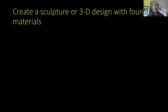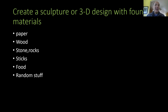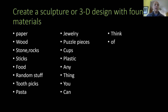You're going to create a sculpture or 3D design with found materials. What could those materials be? I have a list, but you can use anything not even on it. Some examples: paper, wood, stone or rocks, sticks, food, random stuff — toothpicks, pasta, jewelry, puzzle pieces, cups, plastic, anything you can think of. You might find things at your home that others don't have, and you might develop a sculpture from those things.